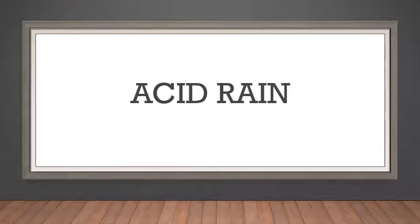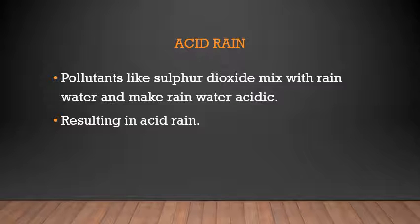Acid rain can kill animals and plants, and it can cause skin cancer in human beings — it has very many ill effects. Condensation and formation of rain clouds happens in the atmosphere. When the air is polluted, the pollutants react with the water — for example, sulfur dioxide combines with water and makes the water drops acidic. Such polluted rain is called acid rain. It harms animals, kills plants, and also goes into the soil and pollutes the ground water.